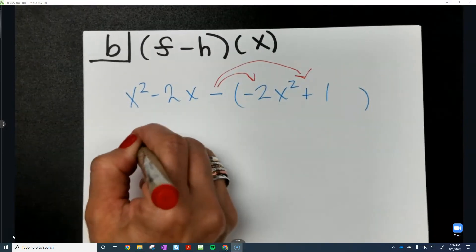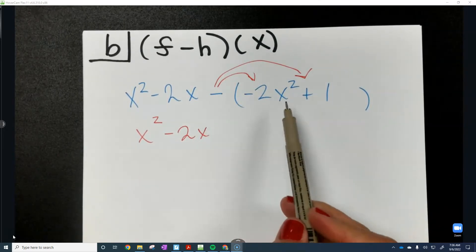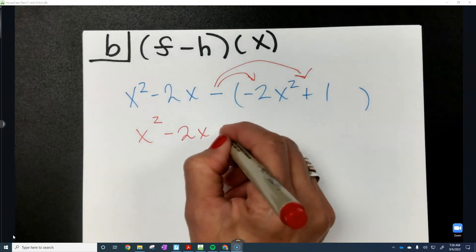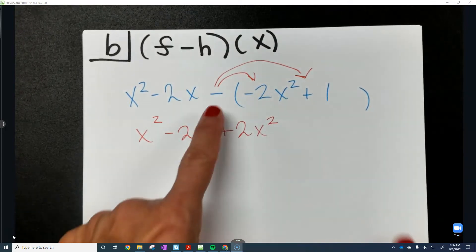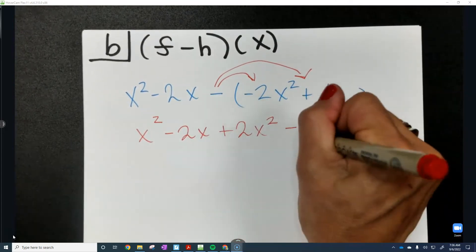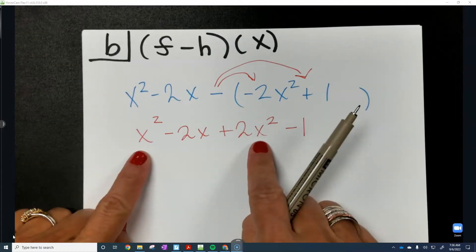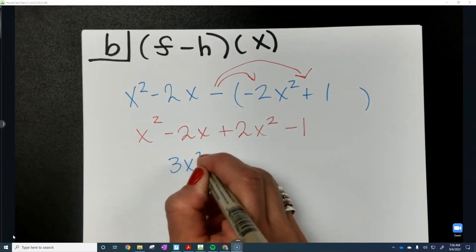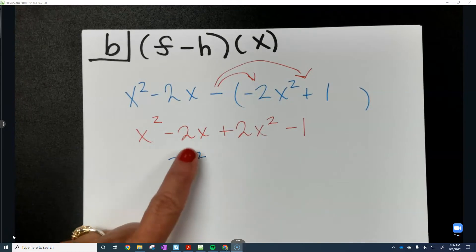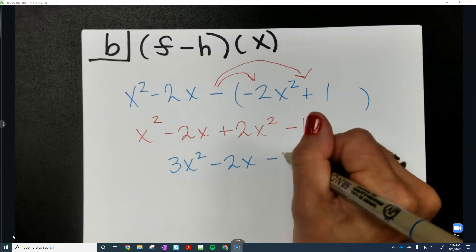So this is going to be x squared minus 2x. And remember, when you distribute your negative, this turns into a positive 2x squared. And then remember, that's going to be a minus 1 at the end. So when you combine like terms, you're going to have 2x squared plus another positive x squared. So it's going to be 3x squared that's leading this, and then minus 2x, and then of course, minus 1.